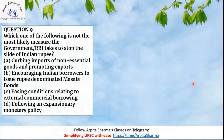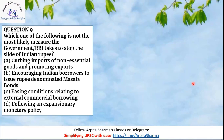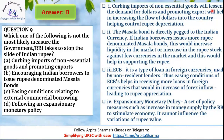Question 9: Which is NOT the most likely measure the government or RBI would take to stop the slide of the Indian rupee? Options: (A) curbing imports of non-essential goods and promoting exports, (B) encouraging Indian borrowers to issue rupee-denominated masala bonds, (C) easing conditions relating to external commercial borrowings, or (D) following an expansionary monetary policy. The correct answer is option D. Curbing imports lessens demand for dollars; promoting exports increases dollar inflow, helping control rupee depreciation.